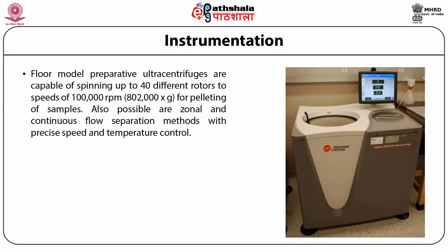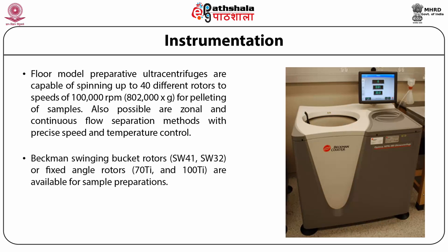The Beckman Preparative Ultracentrifuge is capable of spinning up to 40 different rotors to a speed of 100,000 rpm — that is 800,000 g — for pelleting of samples. It also enables zonal and continuous flow separation methods with precise speed and temperature control. Beckman swinging bucket rotors or fixed angle rotors are available for this type of sample preparation, and this is the most widely used preparative ultracentrifuge.